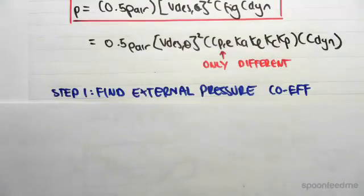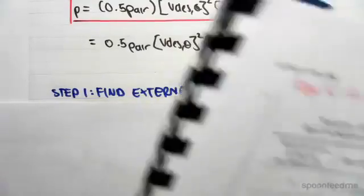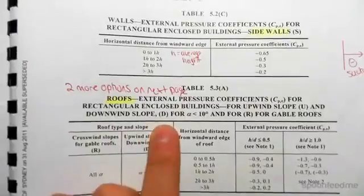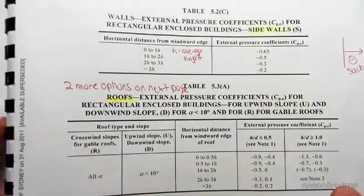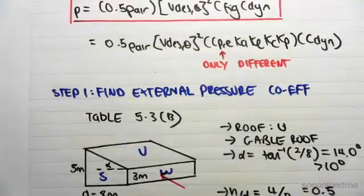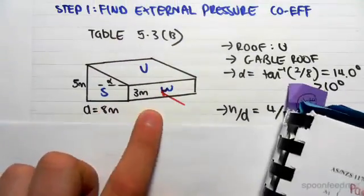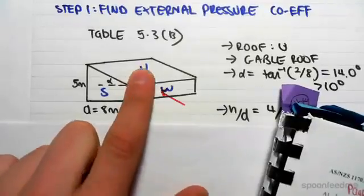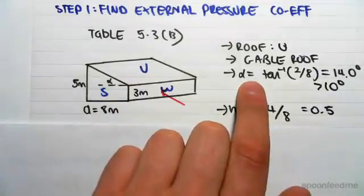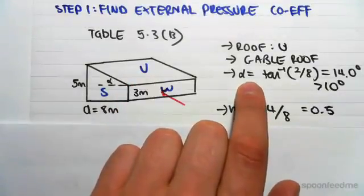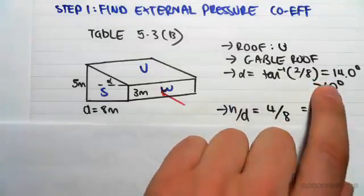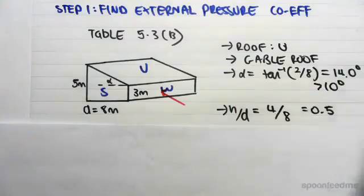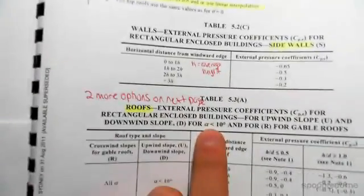Now we need to work out which table we're going to be working with first. If we go to the first table you can see that it's for upward slopes and downward slopes when alpha is less than 10 degrees and for our gable roofs. If I just draw a quick picture of our structure, we have an upward slope so we could be in this table, but our alpha, the slope of the roof we found in previous videos to be 14 degrees, so that's greater than 10 degrees, so it doesn't fall into this category here.